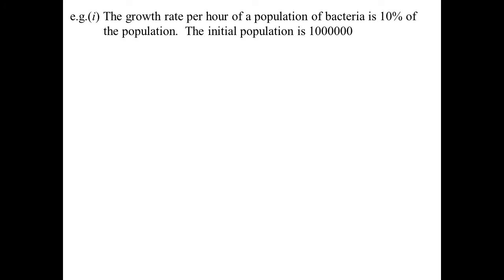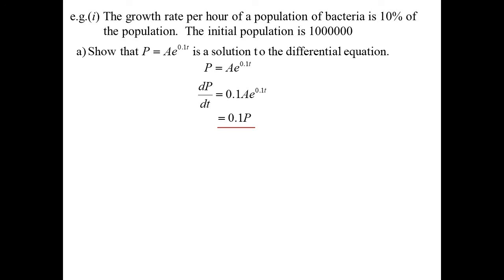So at this stage, the sort of question they might ask, because we haven't done integration, is they'll just do that, like I did with that proof, will show that this is a solution. Show that this works. P is Ae^(0.1t). Differentiate that, I get 0.1Ae^(0.1t). 0.1P is basically exactly what I just did in that proof. So it does satisfy our equation.